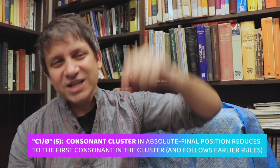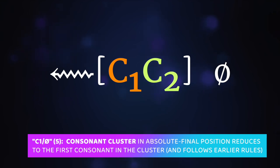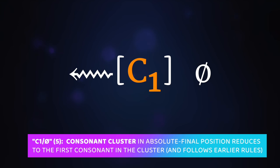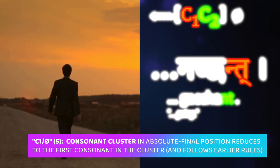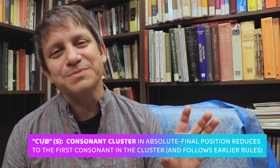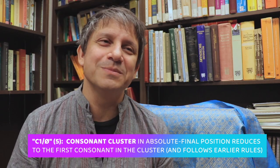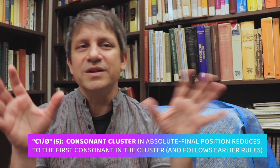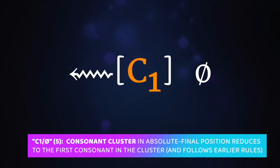Finally, when there's a consonant cluster in word-final absolute position, the situation is fairly simple. Generally speaking, you're not allowed to have a consonant cluster ending a sentence. The cluster gets reduced to just the first letter in the conjunct. So the word bhavant, meaning being, becomes bhavan; and gacchant, meaning going, becomes gacchan. This rule actually gets mostly applied in internal sandhi and comes up when we start to conjugate verbs.